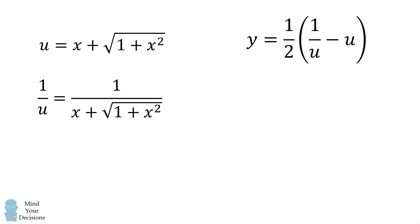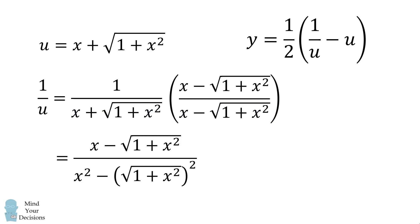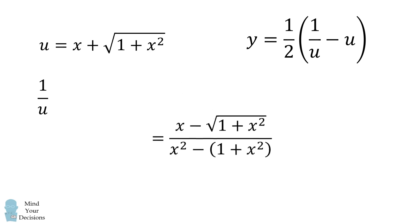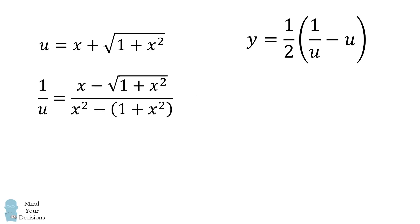We'll multiply the numerator and denominator by the conjugate. What this will do is it will make a difference of squares in the denominator. This will simplify matters tremendously. Now, from here, we can cancel out the x squared terms in the denominator and we're left with negative 1.